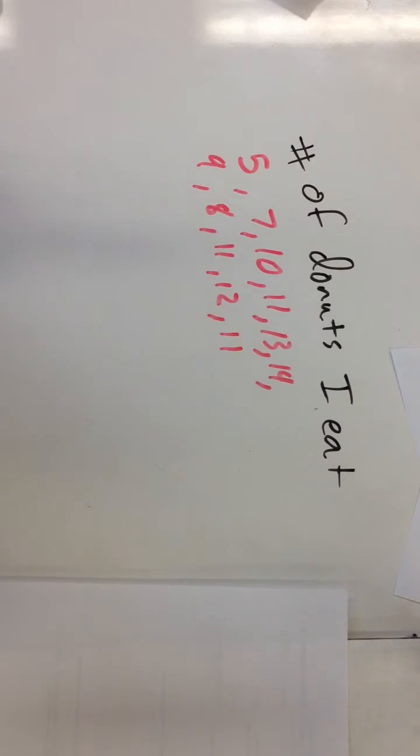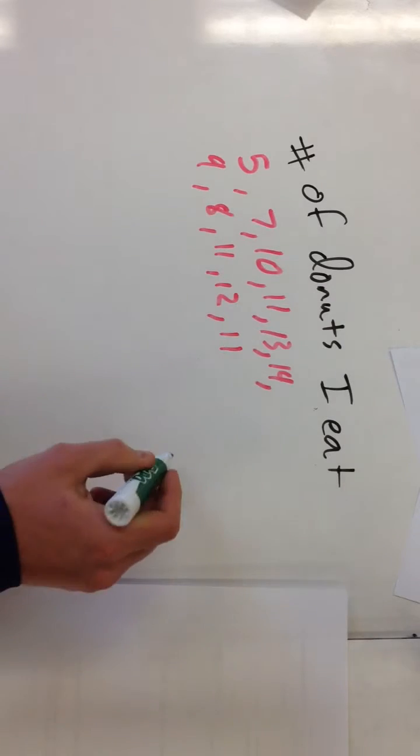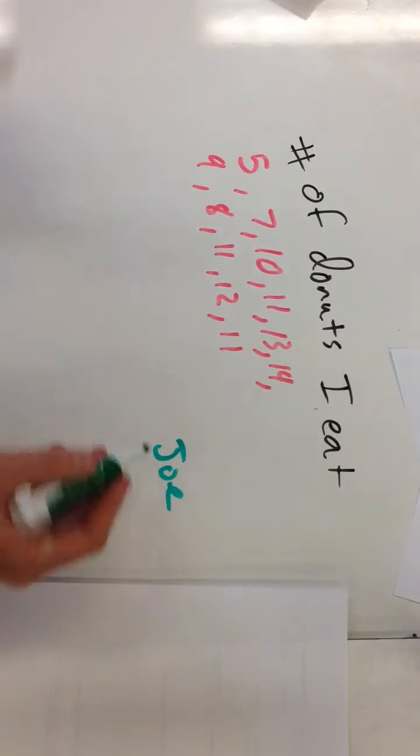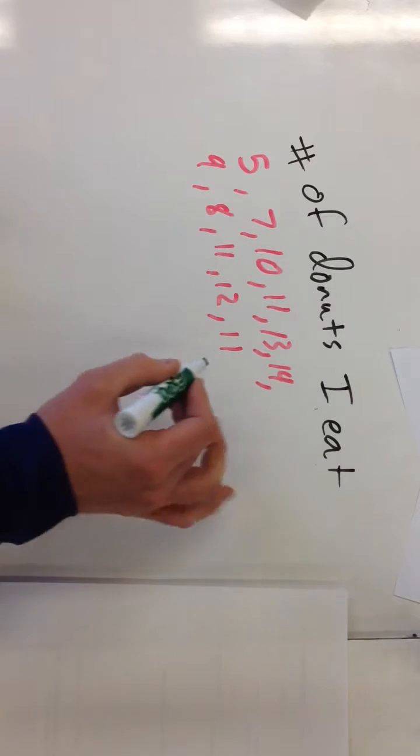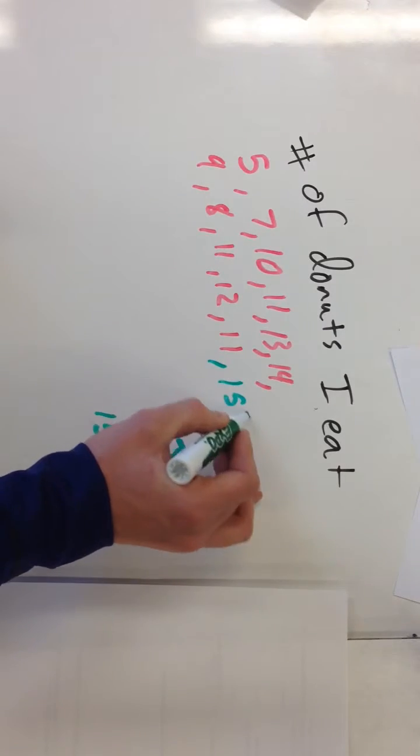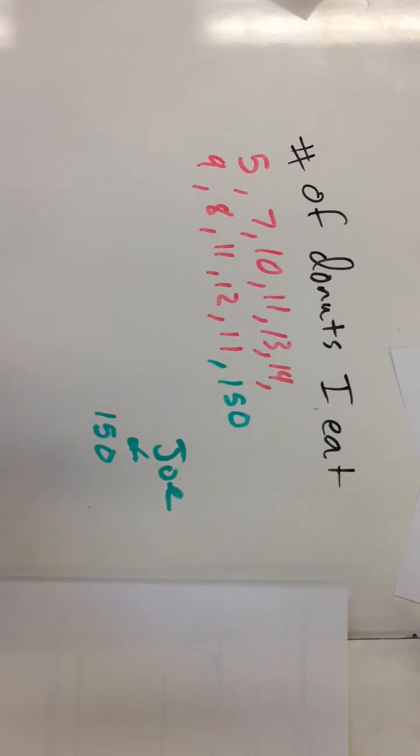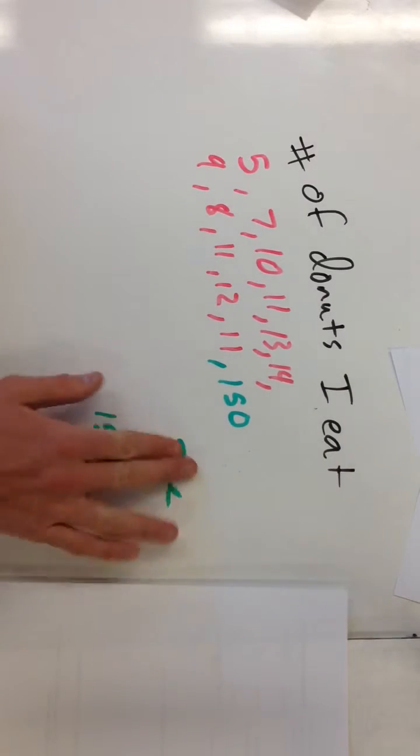So let's say my brother comes into town, Joe. So Joe comes into town, and we decide, you know what, let's celebrate. That month with Joe, I'm going to eat 150 donuts. Assuming that there's 30 days in a month, we're talking about five donuts a day that I'm eating. So when Joe's in town, I kind of gorge out.